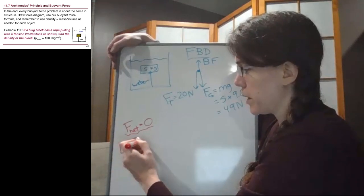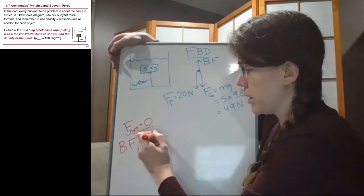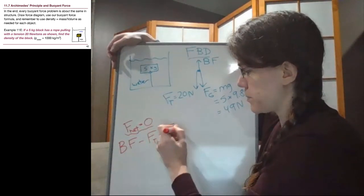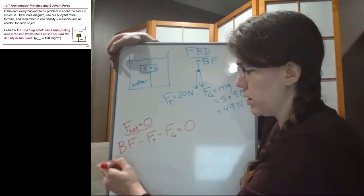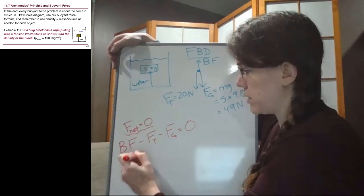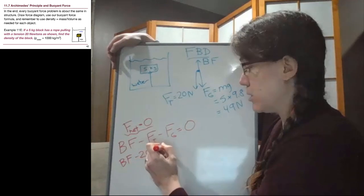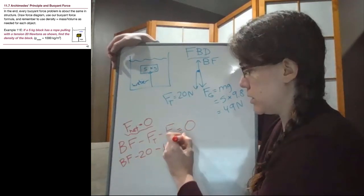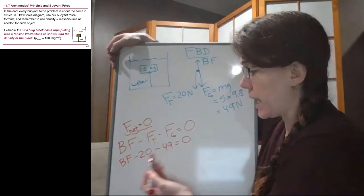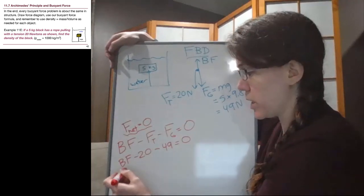So buoyant force minus tension minus gravity equals zero. So that means the buoyant force minus 20 Newtons and minus 49 Newtons is equal to zero. I'll add both of these to both sides.